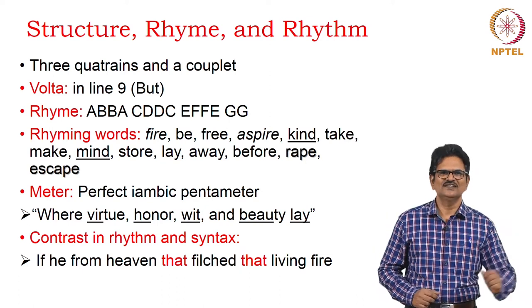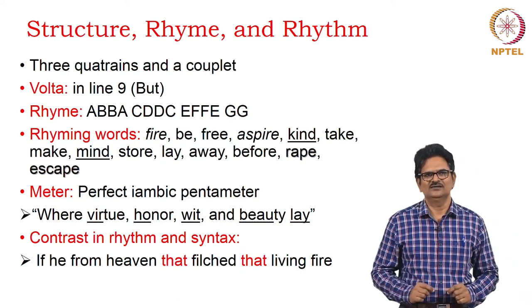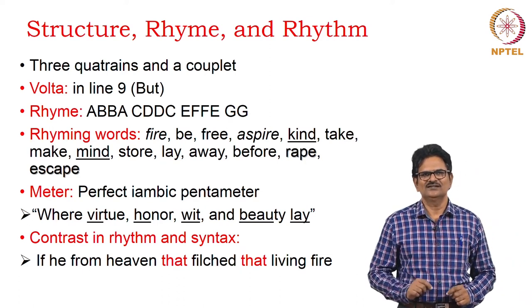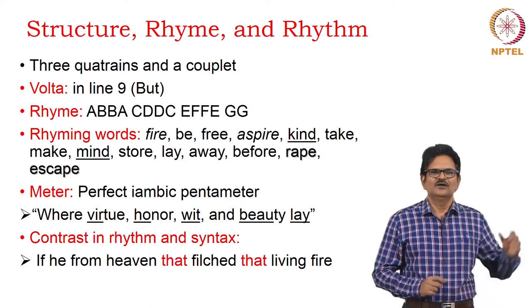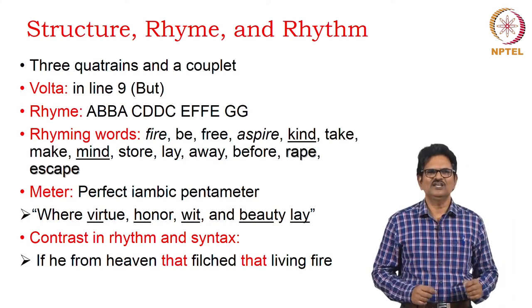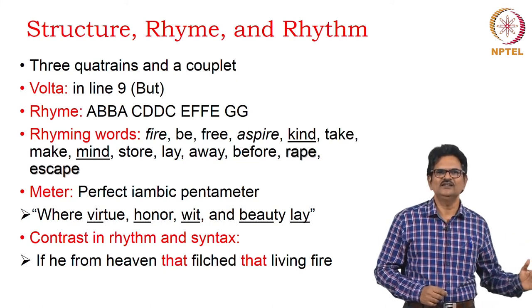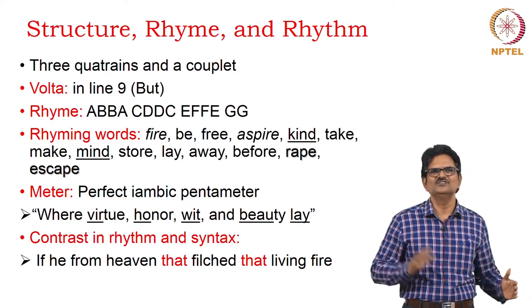When we look at the structure, rhyme, and rhythm in this poem, we find there are three quatrains and a couplet. It also has a volta in line nine through a conjunction. The rhyme scheme is A B B A, C D D C, E F F E, G G. The rhyming words are: fire, be, free, aspire; kind, take, make, mind; store, lay, away, before; rape, escape.